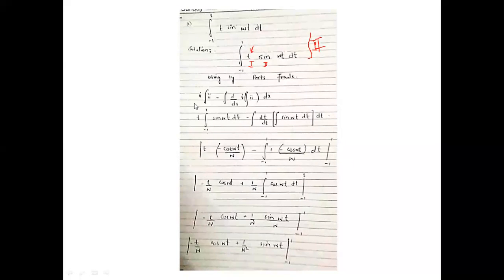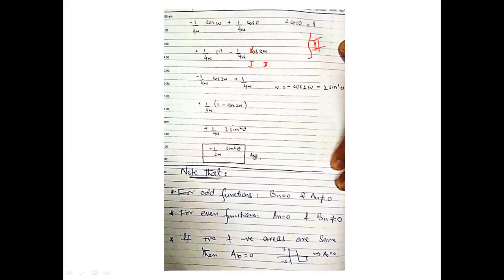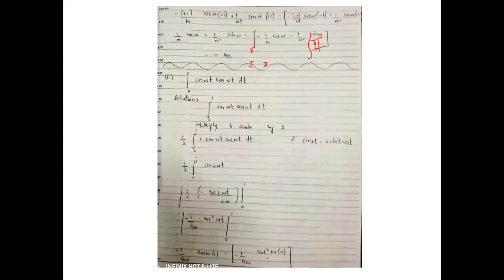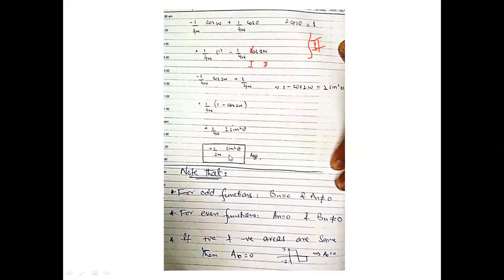For the integral of sin(ωt)cos(ωt), you do not always need integration by parts. A clever trick is to multiply and divide by two: one-half remains, and the factor of two sin(ωt)cos(ωt) equals sin(2ωt) by the trigonometric double-angle identity. This simplifies the integral directly without needing integration by parts.